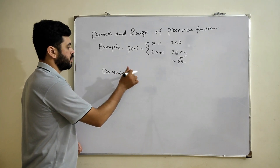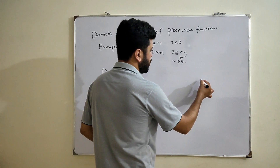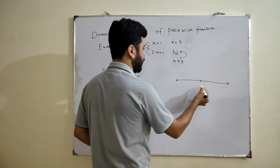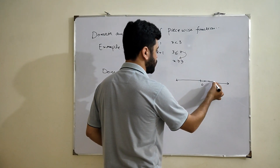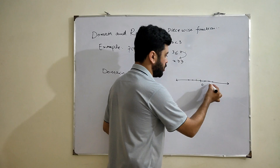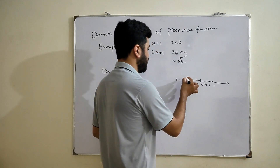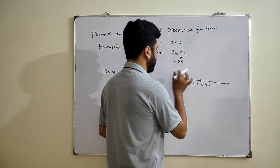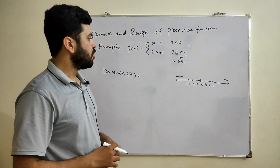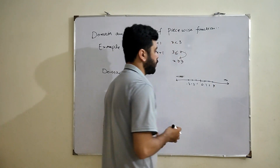Let's find the domain of this function. Consider a real number line going from negative infinity to positive infinity, with points marked at negative 3, negative 2, negative 1, 0, 1, 2, and 3.